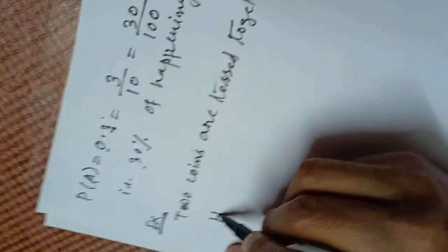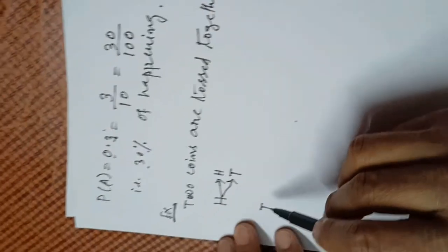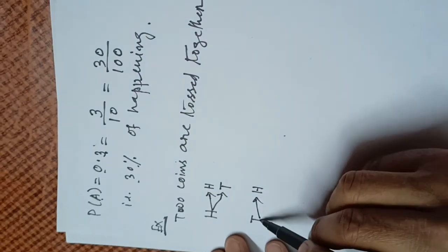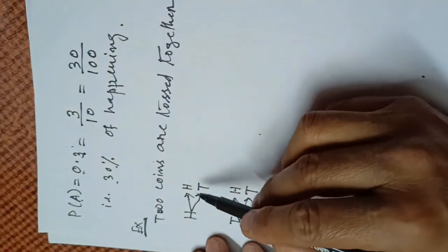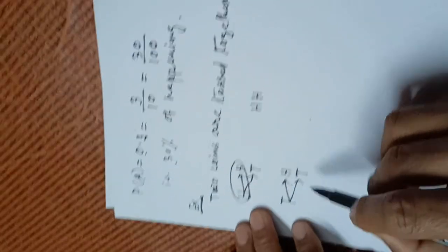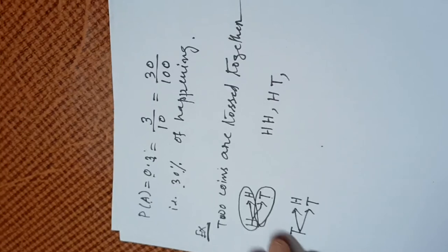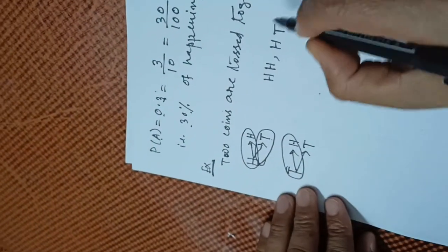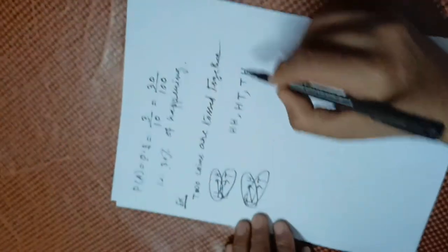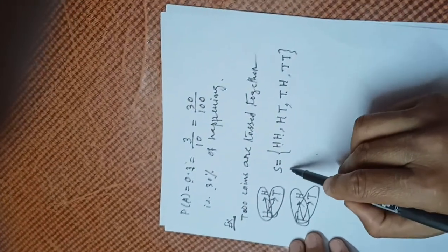The first coin may be head or tail, and the second coin may again be head or tail. So the possible outcomes are: HH, HT, TH, and TT. Therefore the sample space is S = {HH, HT, TH, TT}.